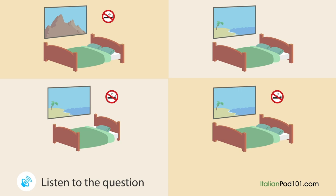A man is making a reservation at a hotel. [Question: In which room will he stay?] "Hotel Miramare, how can I help you?" "Hello, I'd like to stay for one night on September 22nd." "Of course. One night from September 22nd. How many people?" "Two." "Do you prefer a smoking or non-smoking room?" "Non-smoking." "The only non-smoking room available that day has a mountain view. Is that ok?" "Well, I was hoping for a sea-view room." "I'm sorry, but the only sea-view room available that day is a smoking room." "I see. Is there a non-smoking sea-view room available for September 23rd?" "Yes, there is." "Good, then I'll book for September 23rd."